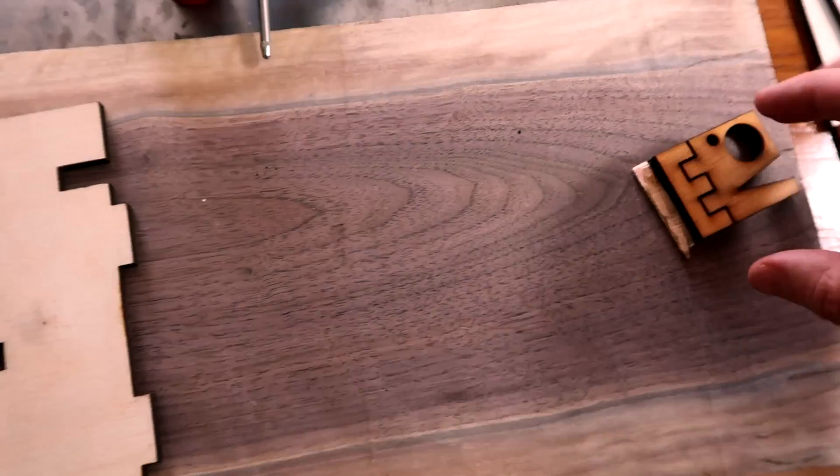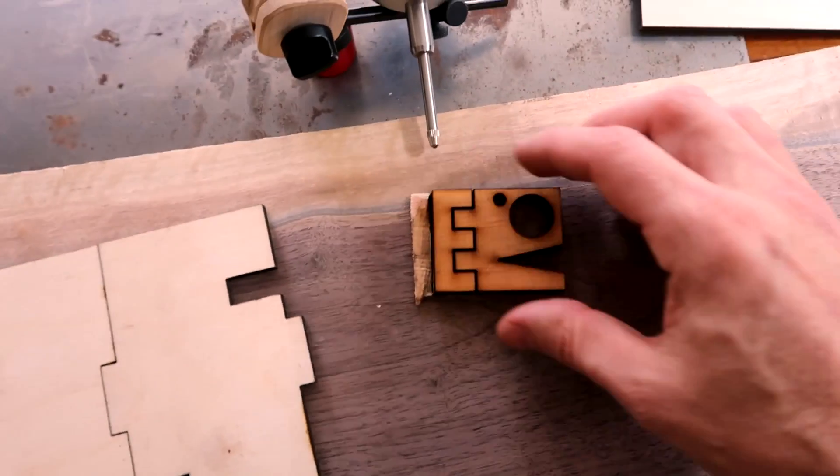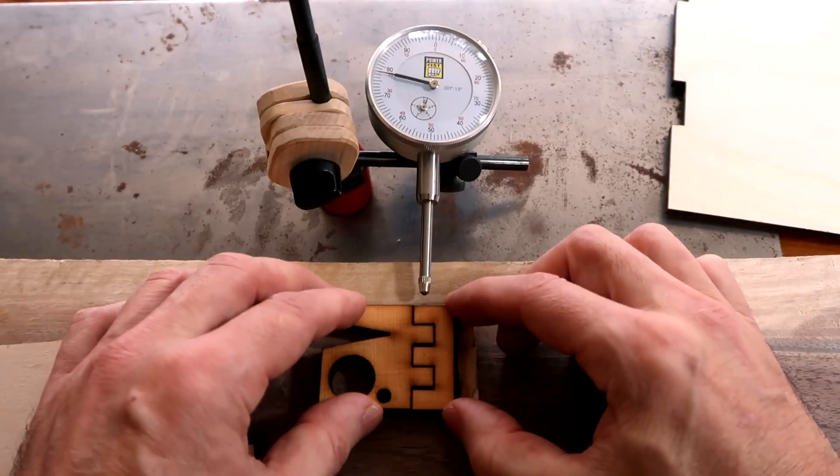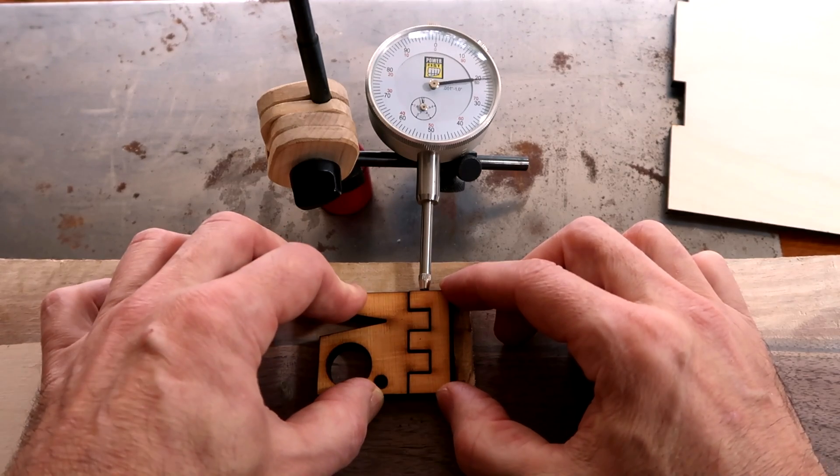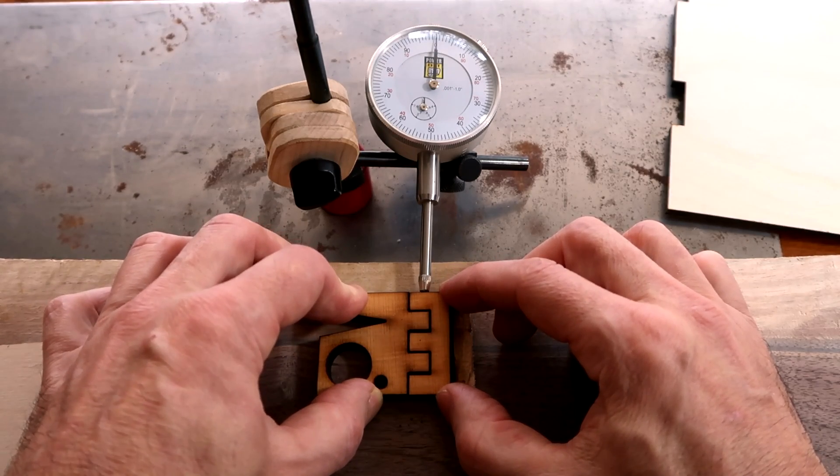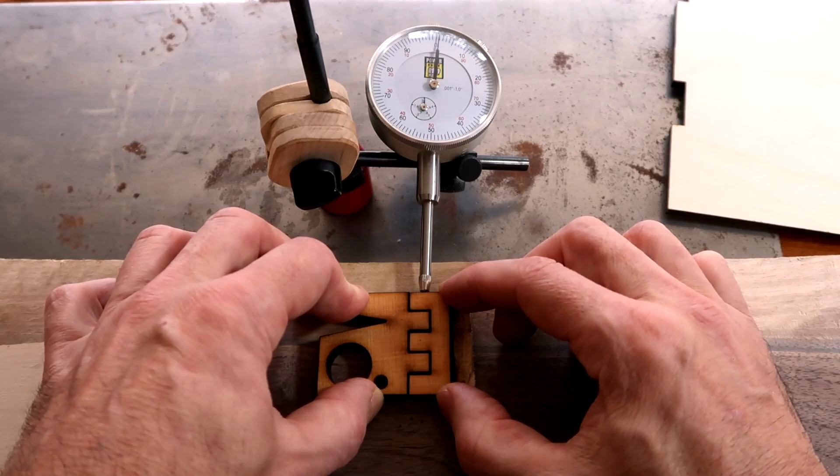Let's compare that first to this test piece I cut at the UNB makerspace. On the box joint on this test piece, I have a play of about 21 thou.